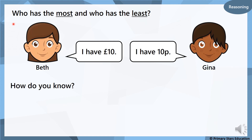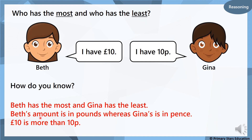So here we have some word problems: who has the most and who has the least? Beth says 'I have 10 pounds', Gina says 'I have 10 pence.' Who has the most amount of money? It is Beth. So who has the least? It is Gina, because Gina has 10p. How do you know? Beth's amount is in pounds where Gina's is in pence, and 10 pounds is more than 10p. That's how we explain those answers.